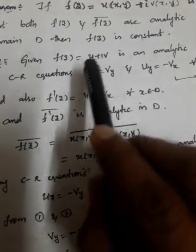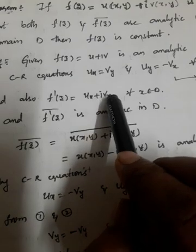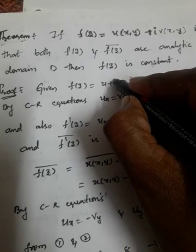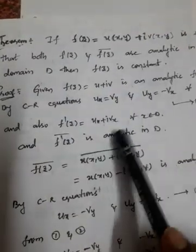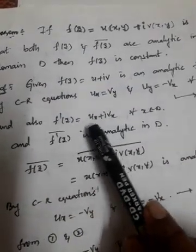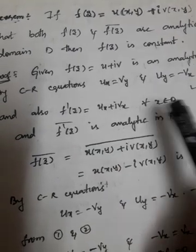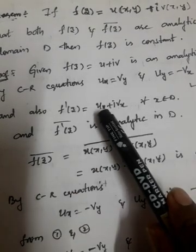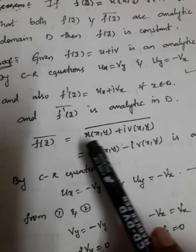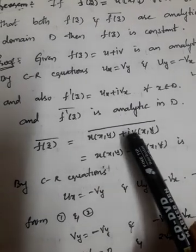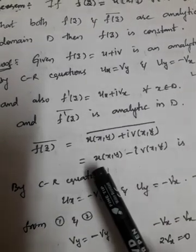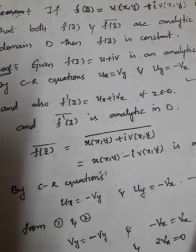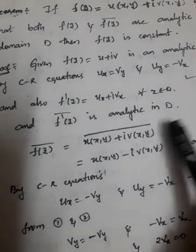Also, f'(z) is analytic, and with respect to x we are differentiating: f'(z) = u_x + iv_x, for all x belonging to D. Now, f(z̄) is the conjugate, so f(z̄) = u(x,y) - iv(x,y), just as z = x + iy gives z̄ = x - iy.